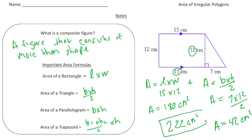Because this is also a trapezoid, you could have just figured out the area of the trapezoid directly, and that should give you the same result as adding the rectangle and triangle areas together.